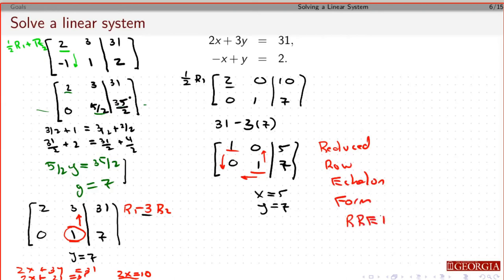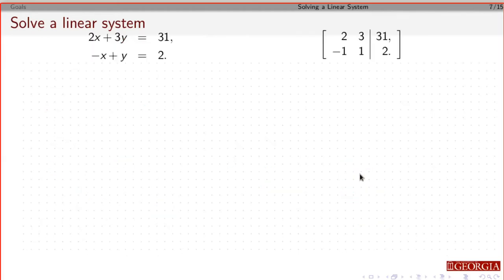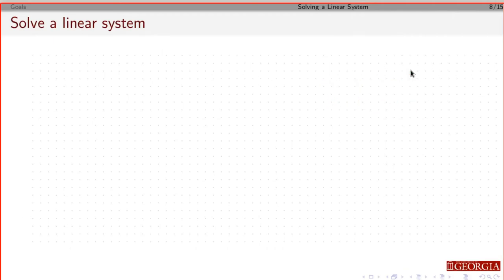Or we call it RREF for short. Basically, we take our linear system, put it in an augmented form, and do the row operations so that all my pivots are 1. This bottom row could either be 0, 0, 0s, or if it's 0, 0, number, that means something went wrong, or 0, 1, something there.